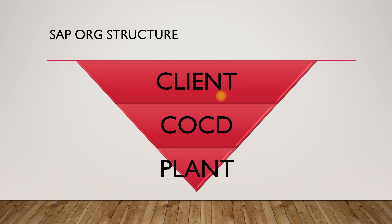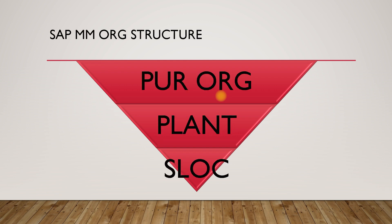If anyone asks you what is a SAP MM organization structure, the SAP MM organization structure starts from the purchasing organization. This is the top organization level of SAP MM. Basically, all things related to any kind of purchasing activity that you do inside the MM module require the purchasing organization first — it is the top organization level for SAP MM.